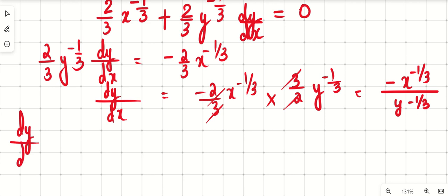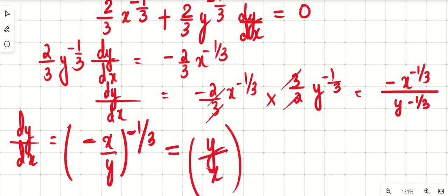Now dy by dx is, the powers are the same. So minus x by y whole raised to minus 1 by 3. See here it is minus 1 by 3. So in order to make this plus I just have to take reciprocal. When we take the reciprocal minus x by y raised to minus 1 by 3. To make it plus just take the reciprocal and put the negative sign.